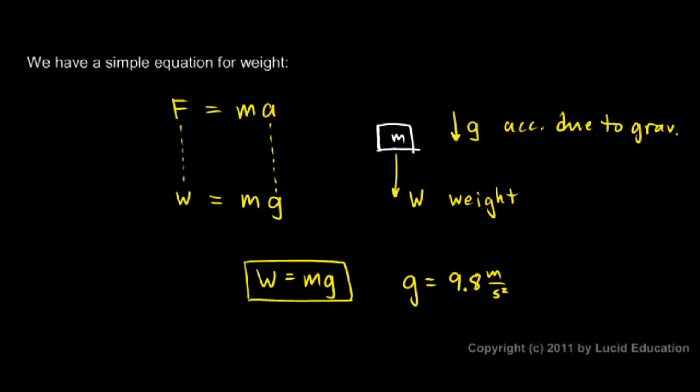So we have this equation for weight, and it's nice to remember that this is simply a special case of Newton's second law. This equation here, F equals MA. We just have for our force, we have the weight, and for the acceleration, we have the acceleration due to gravity.